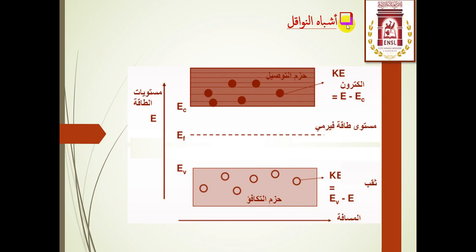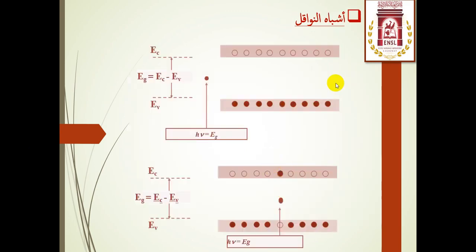عند درجة الصفر المطلق تكون حزمة التوصيل فارغة تماما من الإلكترونات وحزمة التكافؤ ممتلئة بالإلكترونات فتكون عازلة. حتى عند رفع درجة الحرارة قليلا تبقى عازلة، لكن عند رفع درجة الحرارة فوق ذلك ستزيد في الموصلية كما قلنا.